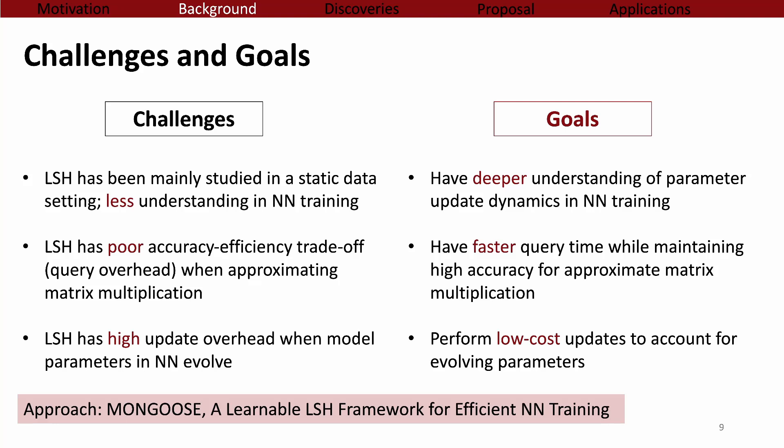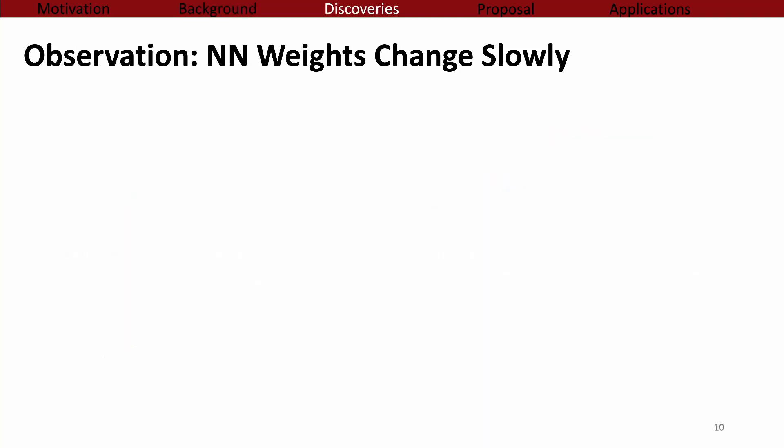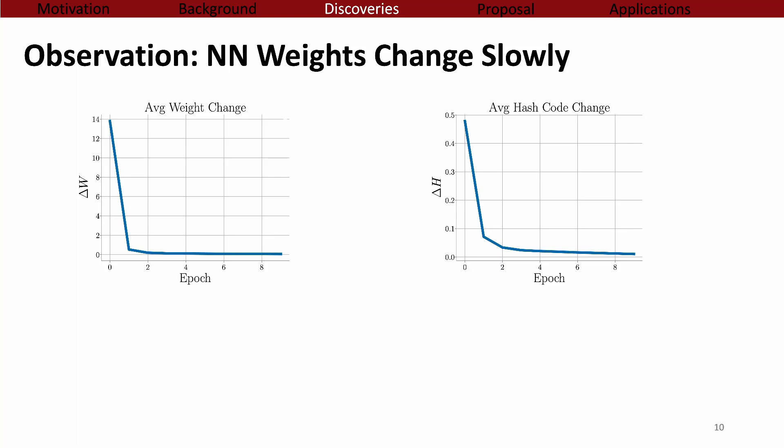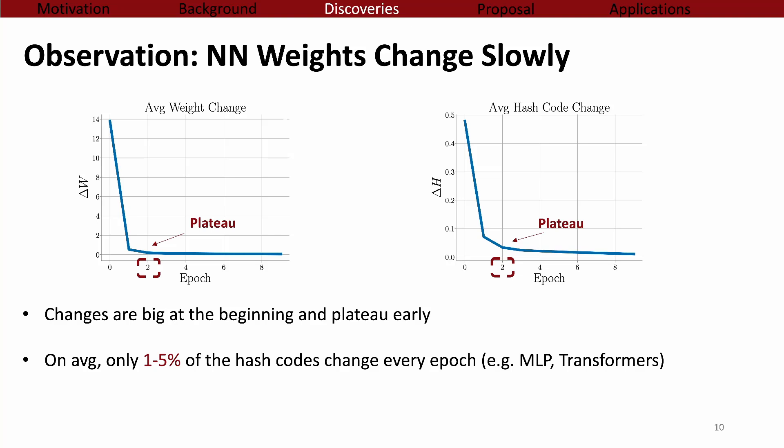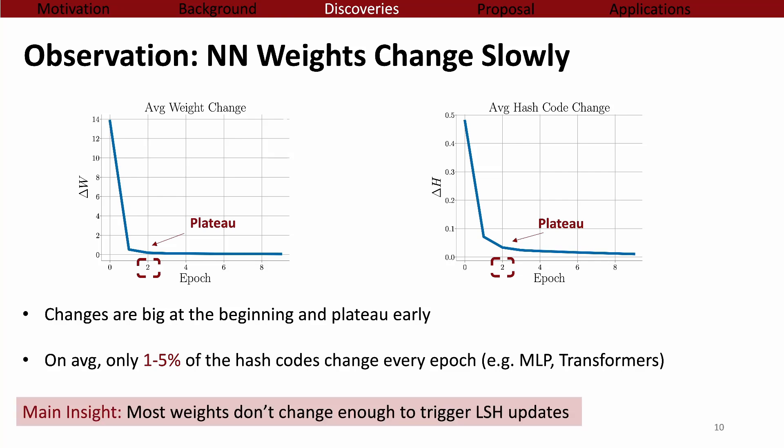The assumption was that with LSH, we have to update the hash table whenever weights change. The good news is that when studying the training dynamics of neural networks, we observe a very important phenomenon: the weights are slowly changing. This is a side-by-side comparison of weight changes and their hash code changes for each epoch. We can see large changes in the first 1-2 epochs and then a plateau. On average, you only need to perform LSH updates for 1-5% of the weights across a wide range of cases. This is the main insight on which Mongoose was built.